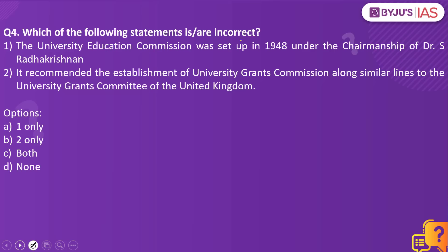Now let's look into the next practice question. Which of the following statements is or are incorrect? The University Education Commission was set up in 1948 under the chairmanship of Dr. Radhakrishnan. It recommended the establishment of the University Grants Commission along similar lines to the University Grants Committee of the United Kingdom. Since it is asking for the incorrect statement, the answer is none — because both statements are correct.